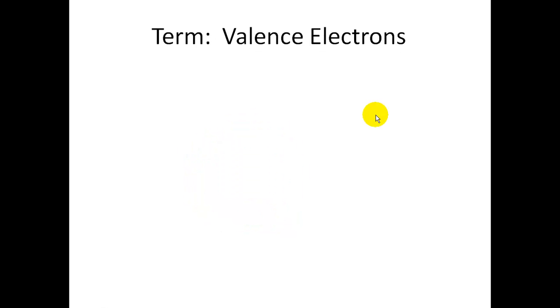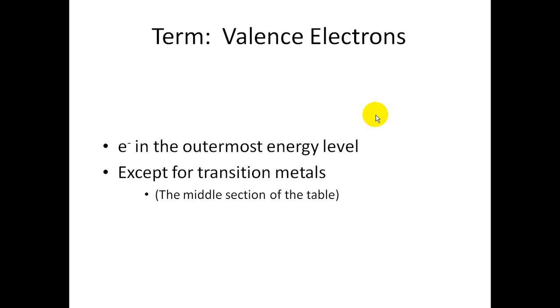The one term I just said was valence electrons. Valence electrons are defined as the electrons that are in the outermost energy level. So for carbon, there are 4 valence electrons. There is an exception with the transition metals, which are the middle section of the periodic table.